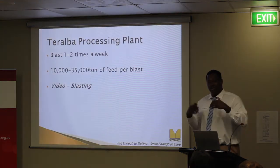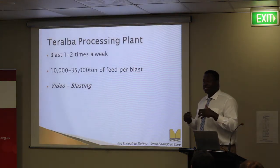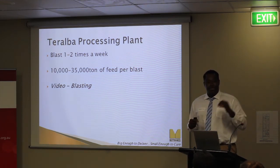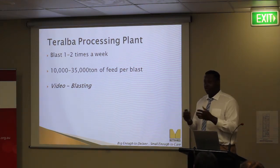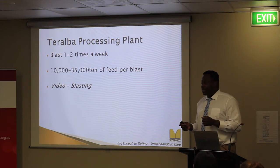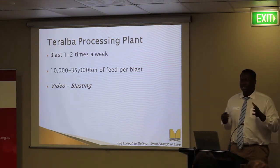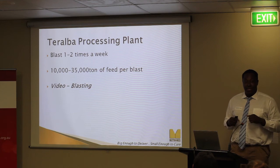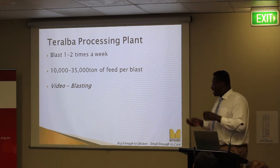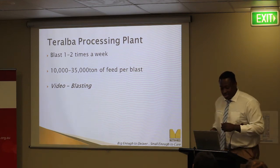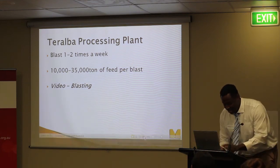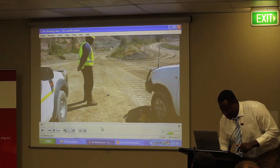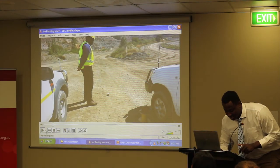To extract the feed, the quarry uses a process called blasting. We can blast typically between one to two times a week depending on demand, and we can extract between 10,000 to 35,000 tonnes of raw feed, depending on how much explosives are used. I have a video to show you what a typical blast looks like.